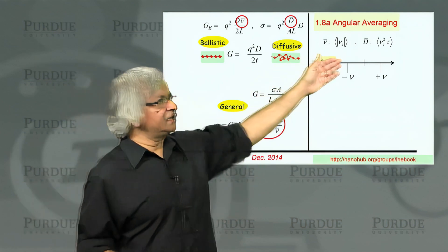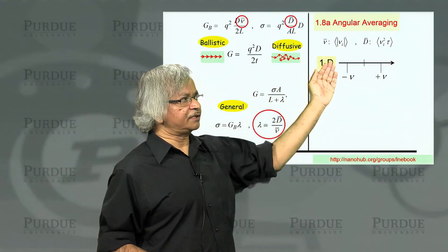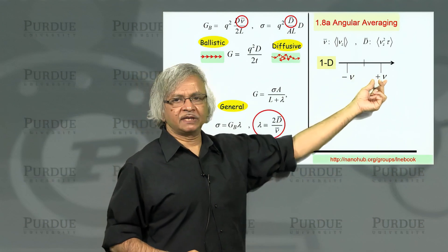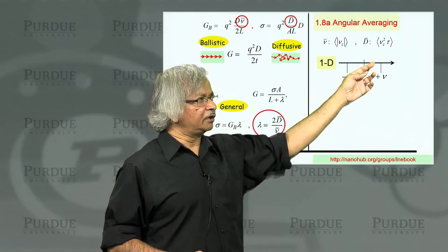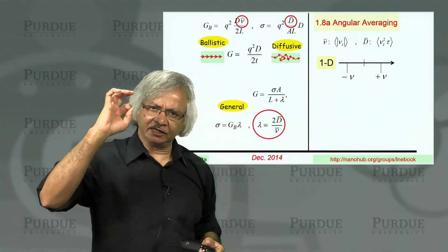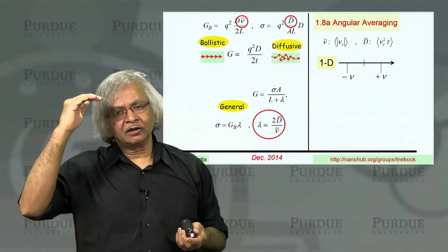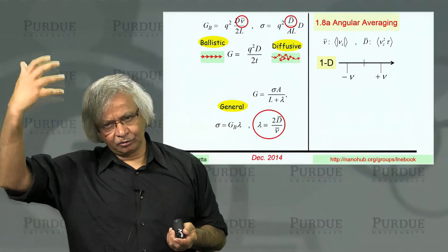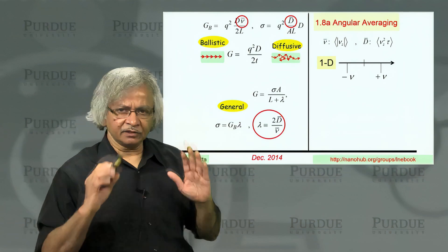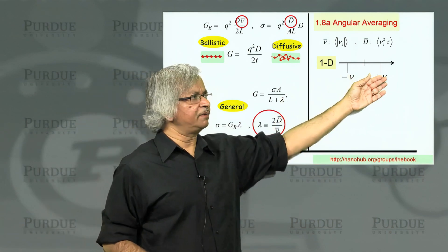So in 1D, and we are talking of elastic transport, we are talking of electrons with a certain energy. So a certain energy corresponds to a certain velocity. But the velocity could be either in the positive z direction or in the negative z direction. So it could have one of two values, plus v and minus v.